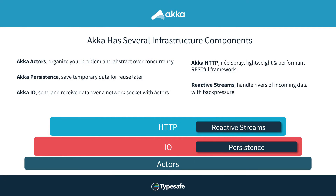Akka has several infrastructure components as part of its core architecture. There are actors themselves, which are message-passing constructs for handling individual interactions between components. Then there are libraries built over these, including Akka IO for handling data coming across a socket, and Akka Persistence for building a journaling of events or commands taking place inside your system. In doing so, you're decoupling the way you store things from the way they're going to be read later on. Then there's Akka HTTP, built upon the Akka IO layer, which is the evolution of the Spray library, now available for Java and Scala.